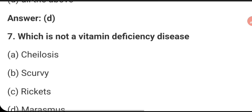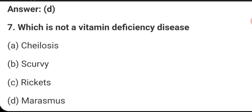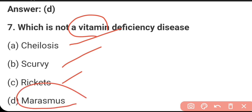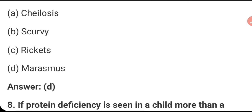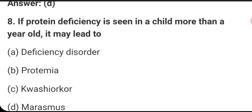Which is not a vitamin deficiency disease? Marasmus is not a vitamin deficiency disease. Scoliosis, scurvy, and rickets are due to deficiency of vitamins, but marasmus is a deficiency of energy and protein. So the right answer is D.